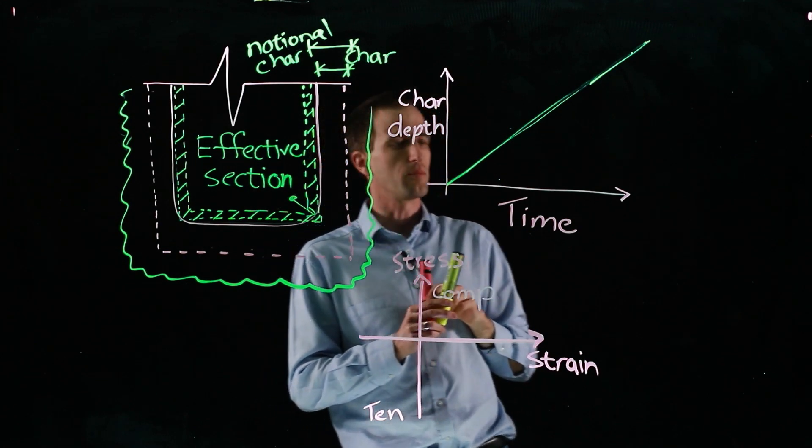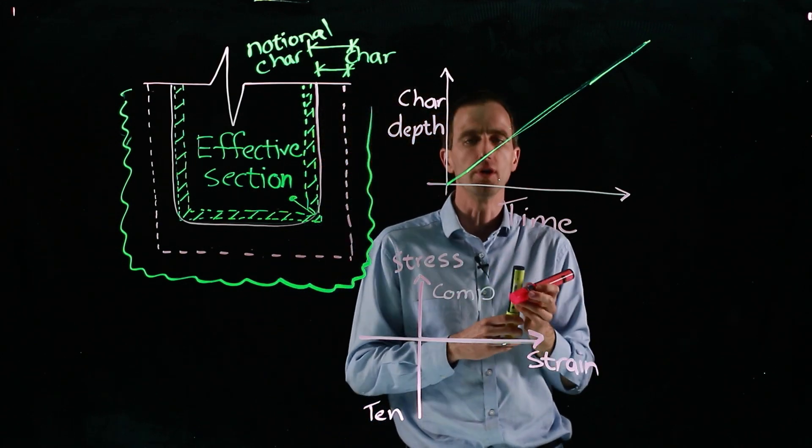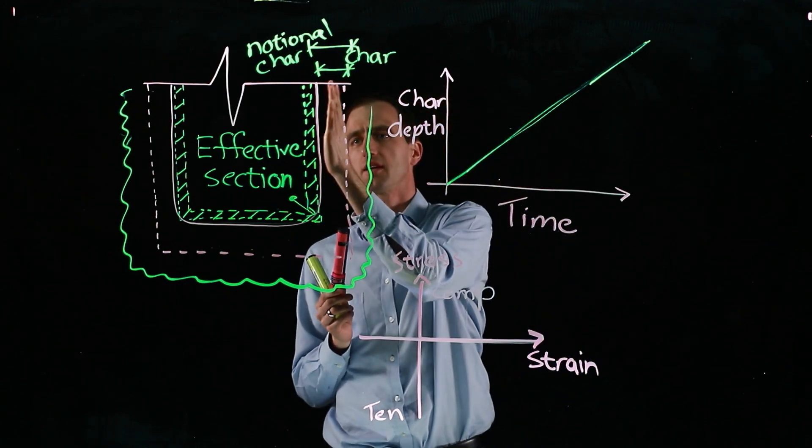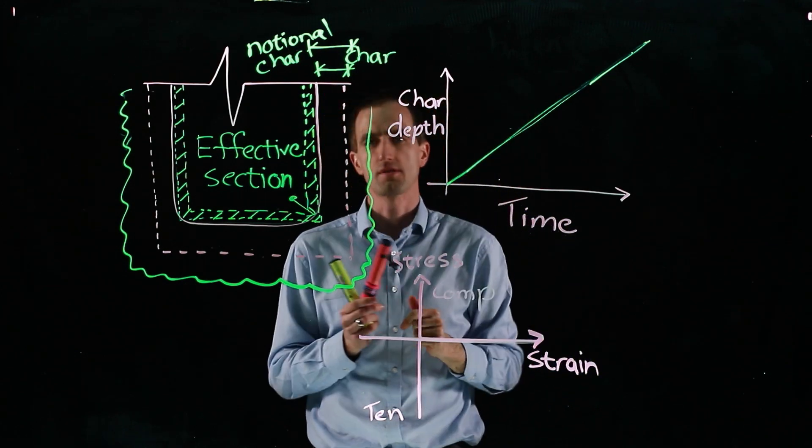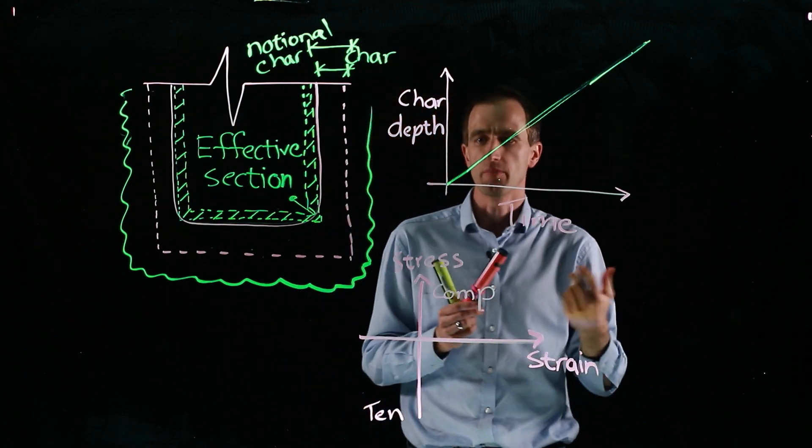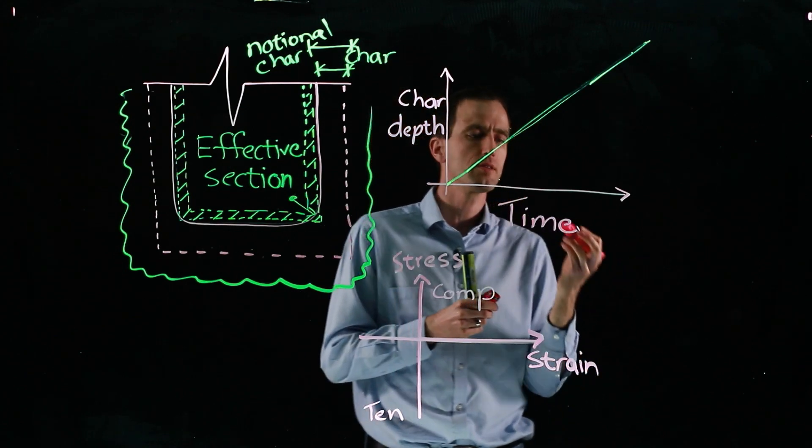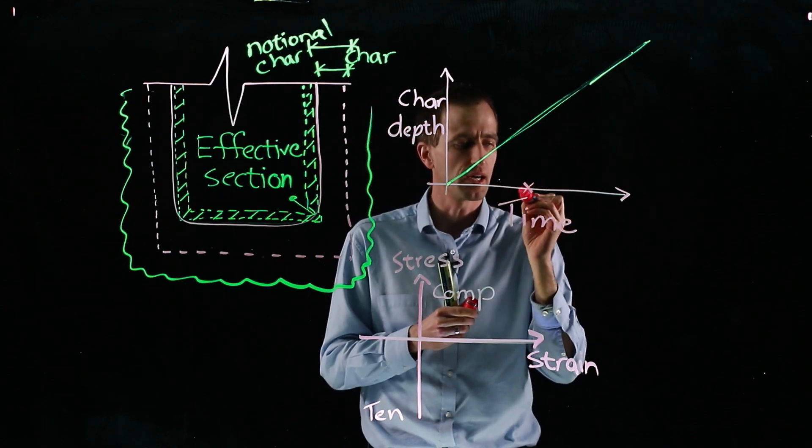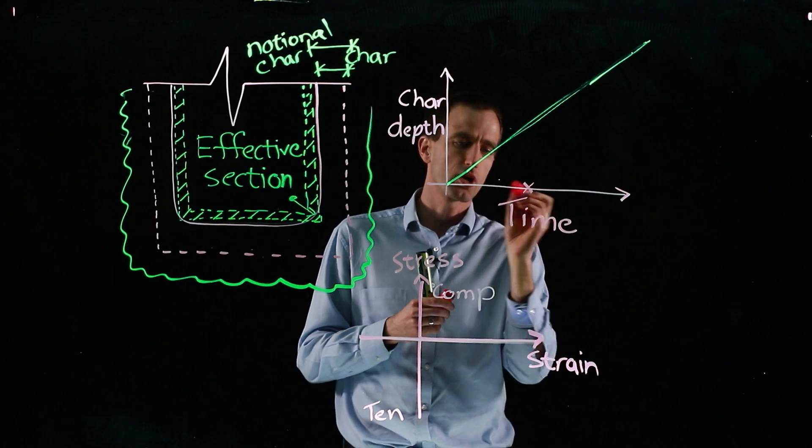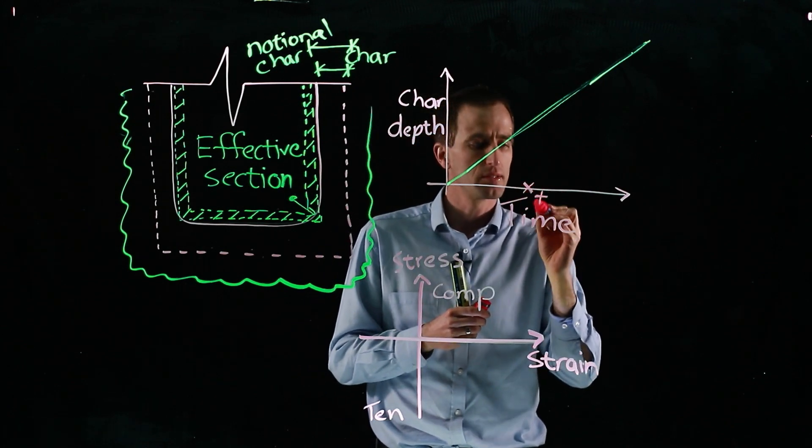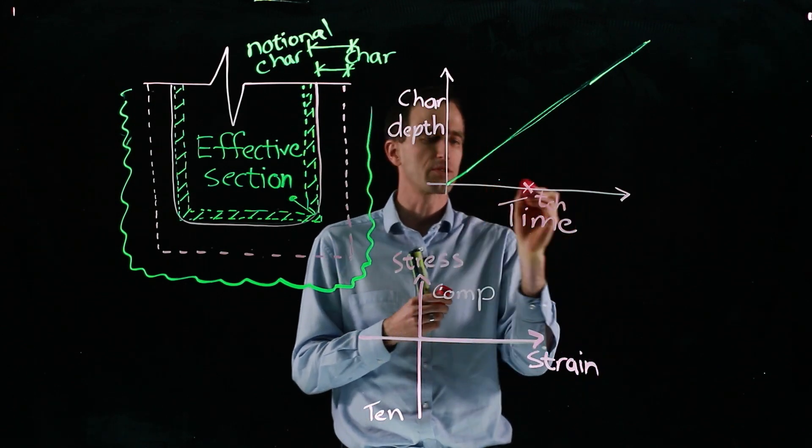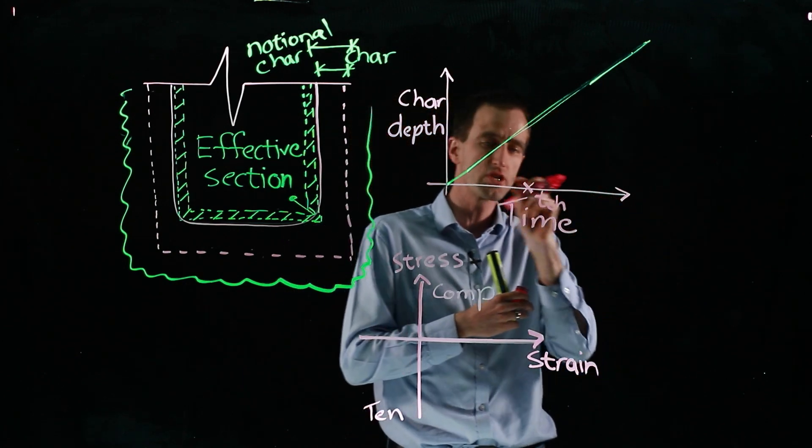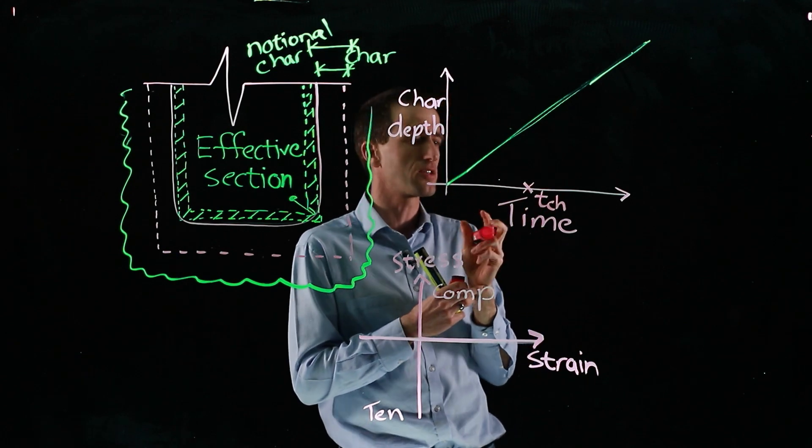But there are also other different models that exist. And for instance, let's say we had a protective layer, a board fixed onto the side of our timber, we want to get some extra fire rating out of it. There are other models, for instance, where you have after a period of time, there is no charring until the heat penetrates sufficiently through our protective layer, our gypsum board, Type X gypsum board or whatever it is. So now we have a time at which charring starts.